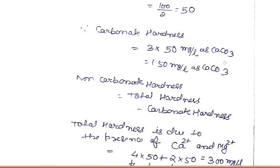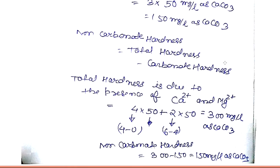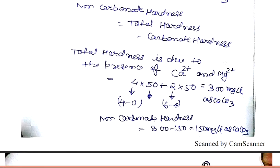Carbonate hardness is 150 milligram per liter as CaCO3. Non-carbonate hardness equals total hardness minus carbonate hardness. Total hardness is due to the presence of calcium ions and magnesium ions, calculated as 300 milligram per liter. Therefore non-carbonate hardness is 150 milligram per liter as CaCO3.